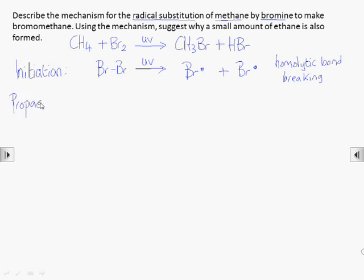The propagation stage consists of two steps. Radicals are very reactive. In the first step, a bromine radical will attack a methane molecule, removing one of the hydrogens to form hydrogen bromide. What's left is an alkyl radical, in this case a methyl radical.